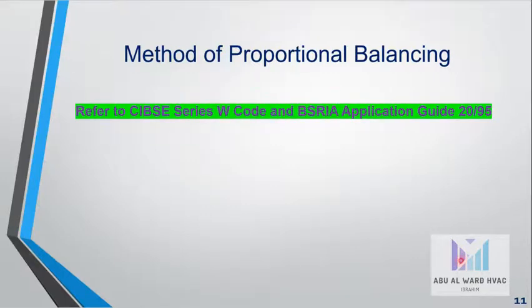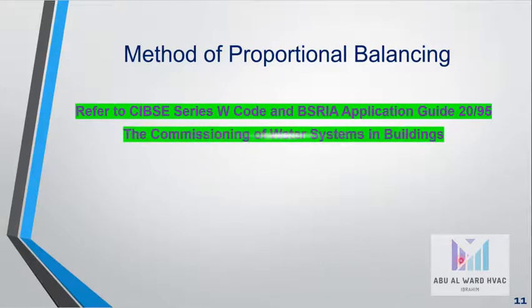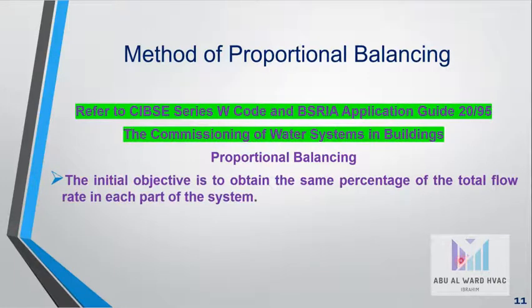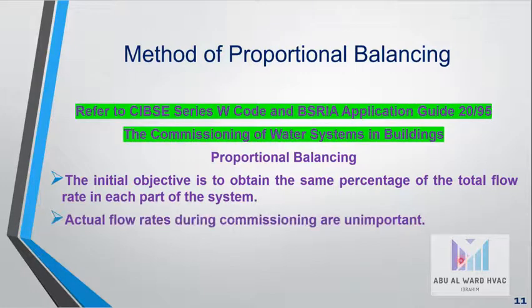What are the methods of proportional balancing? CIBSE Series W code and BUS-RE Applications Guide 20/95, the commissioning of water systems in buildings. The initial objective is to obtain the same percentage of the total flow rate in each part of the system. Actual flow rates during commissioning are unimportant.